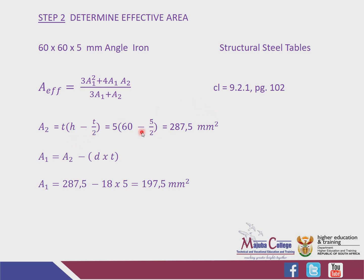Area 2, according to the clause, is the unconnected leg. The formula is T × (H − T/2). T is the thickness of the member: 5 × (60 − 5/2). That gives us 287.5 mm². So that is Area 2.